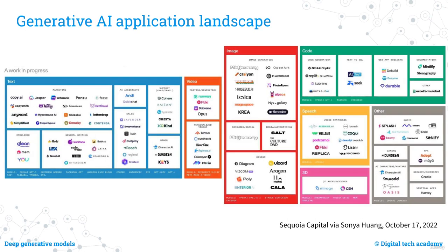We have seen a whole series of examples of how generative models can produce new content. A list of companies currently working on these issues — obtained from Sequoia Capital — shows a wide range working on generative AI related to text, video, image, code generation, 3D model generation, and more. The field of generative models is certainly in huge expansion, with great progress being seen and significant research effort, and it will remain one of the great topics of the near future.